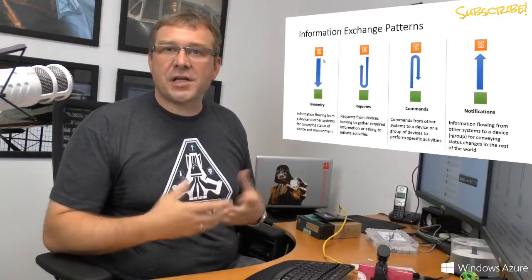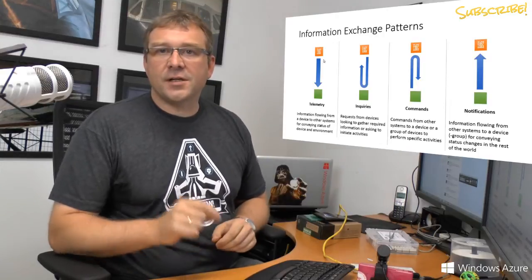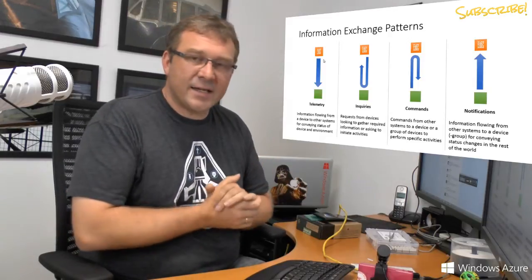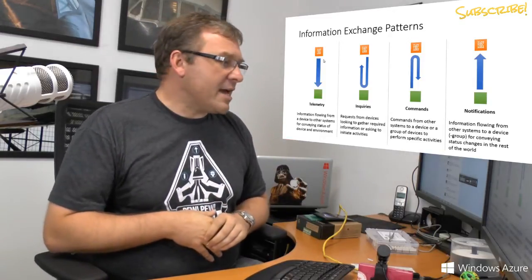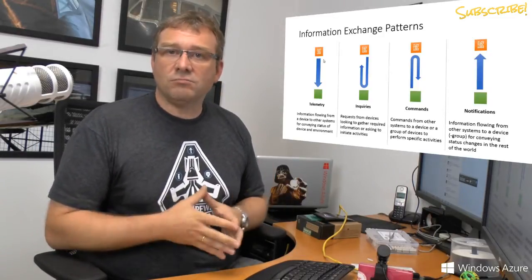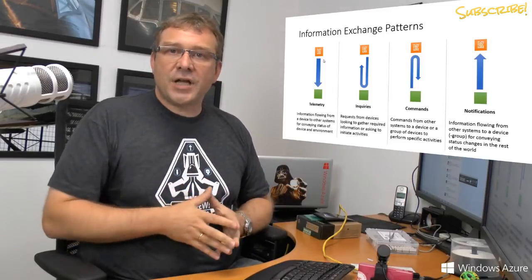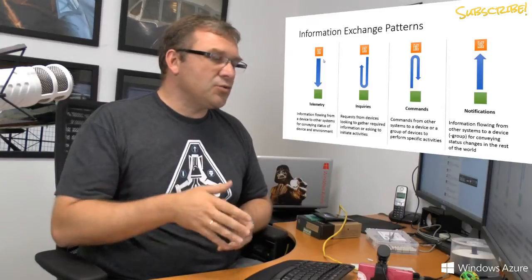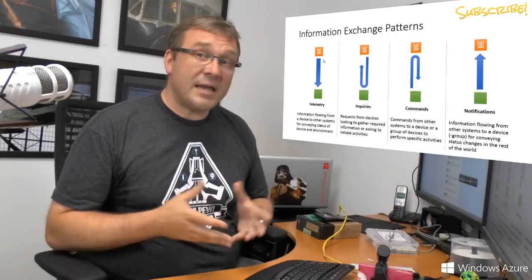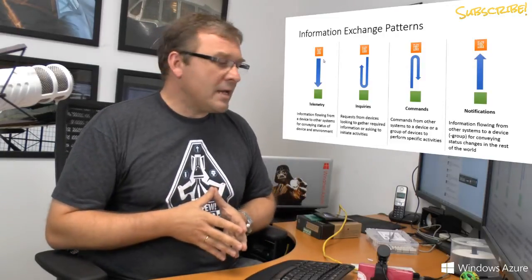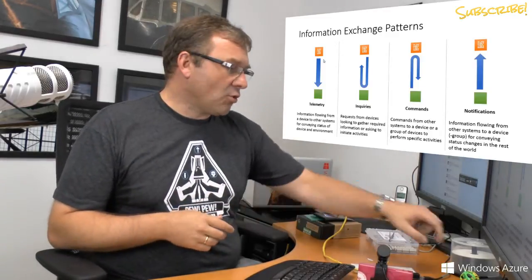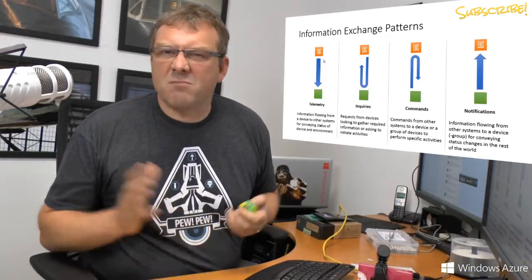Telemetry is data that the device volunteers out of its own functionality. It might be a simple temperature reading conveyed every minute, several times a second, every hour, or every day. Or it might be something more complex — a photo or even a video stream pushed in a one-way fashion from the device into processing systems, which might be evaluated immediately or stored and evaluated later in the context of something like big data.